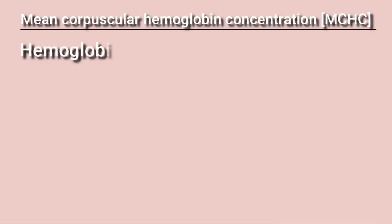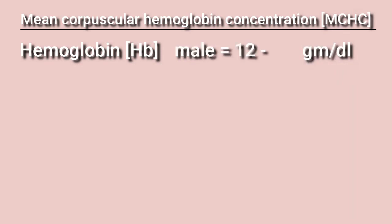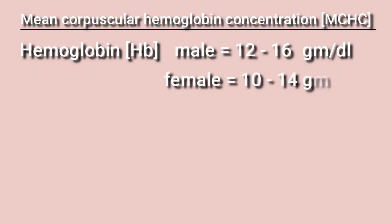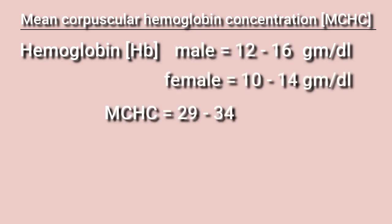MCHC means mean corpuscular hemoglobin concentration. It is different from the normal concentration of hemoglobin expressed as Hb, though both use the same measurement unit — grams per deciliter. Normal hemoglobin concentration differs between males and females: in males it ranges from 12 to 16 g/dL, and in females from 10 to 14 g/dL. MCHC does not vary between males and females and ranges from 29 to 34 g/dL.